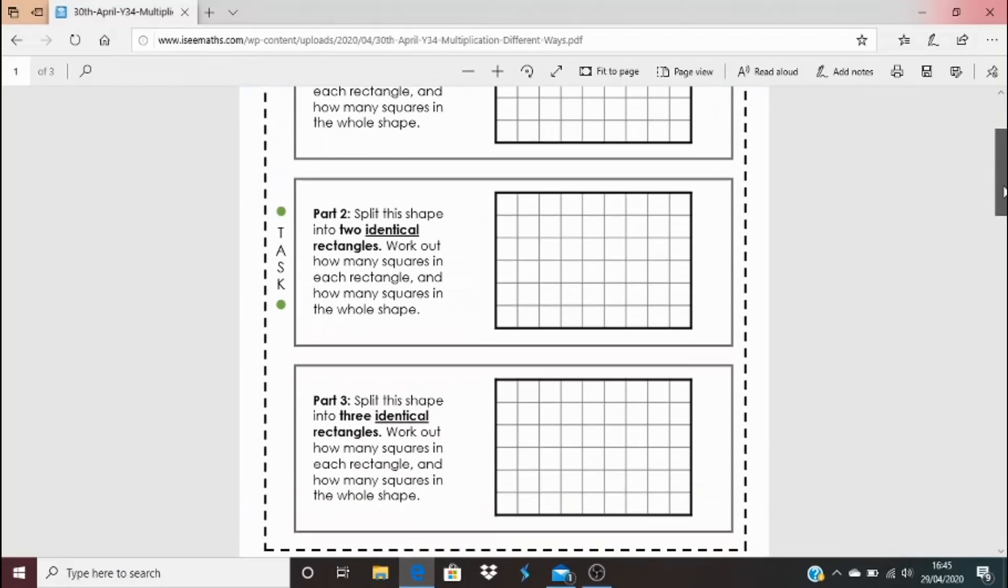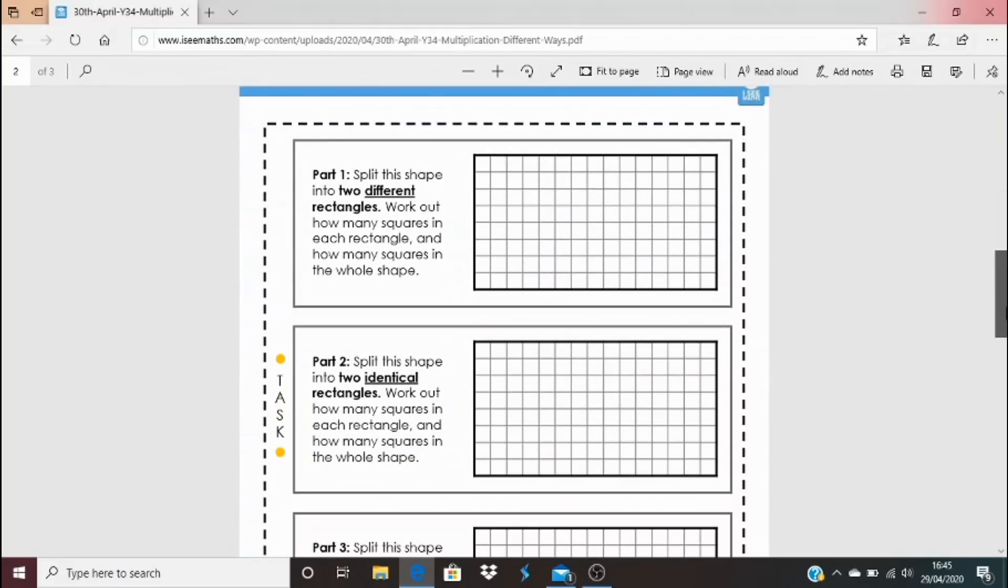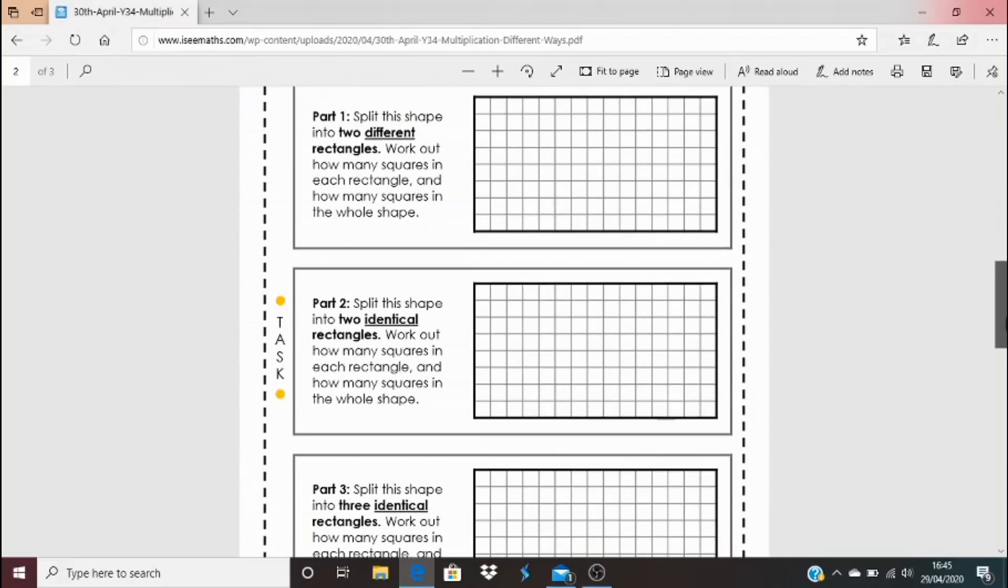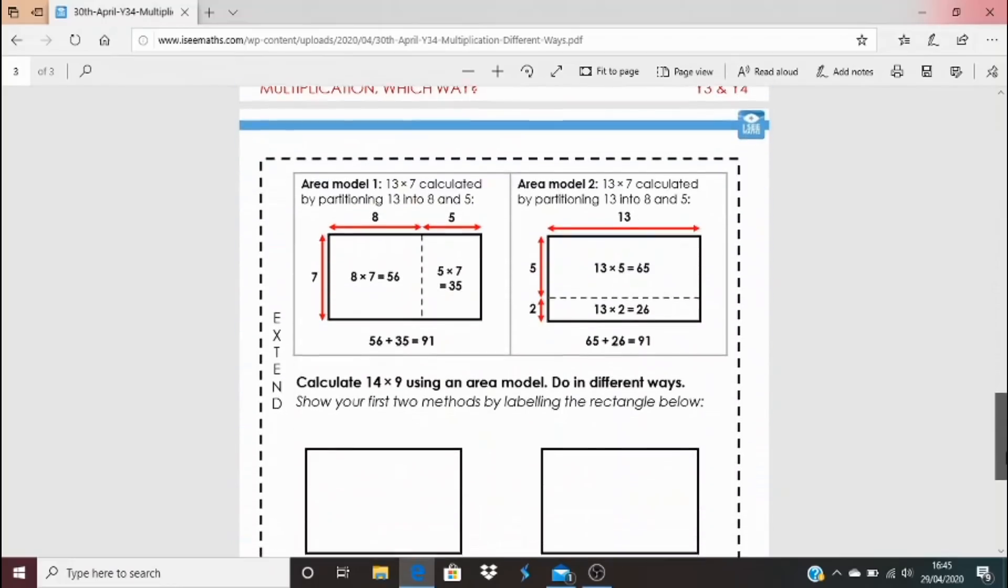A very similar task is this one but there's slightly more squares here. So you might prefer to have a go at the green task or you might prefer to have a go at the yellow task.